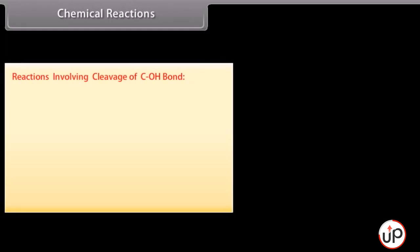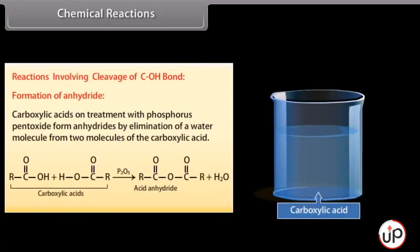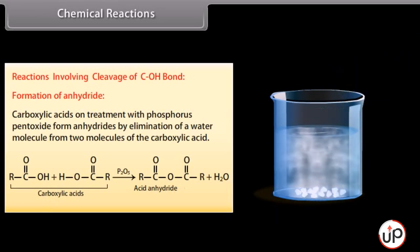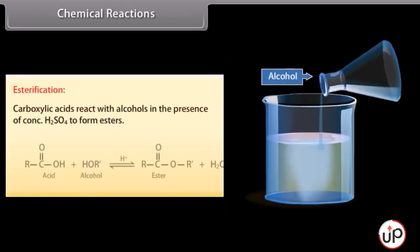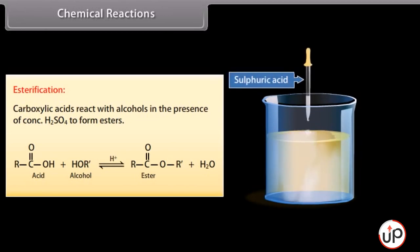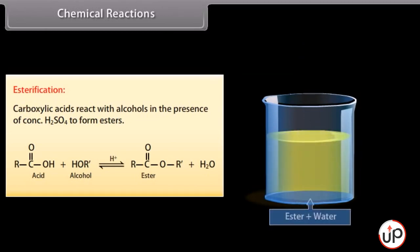Reactions involving cleavage of the C-OH bond. Formation of anhydride: carboxylic acids on treatment with phosphorus pentoxide form anhydrides by elimination of a water molecule from two molecules of the carboxylic acid. Esterification: carboxylic acids react with alcohols in the presence of concentrated sulfuric acid to form esters.